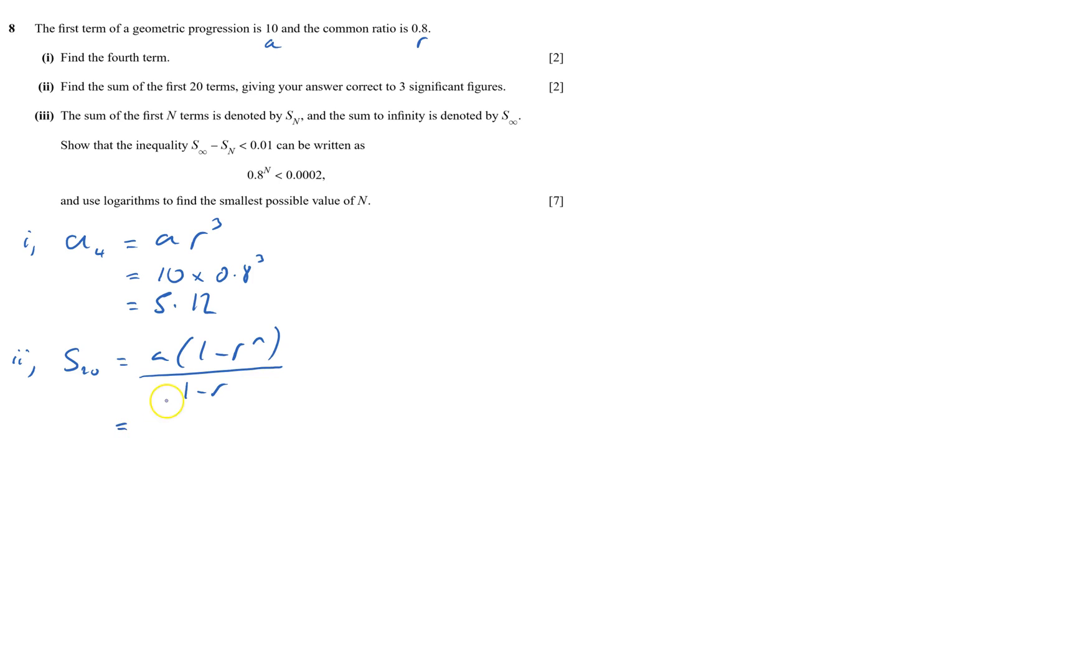Just substituting things, a is 10 times by 1 minus 0.8 to the power of 20, all over 1 minus 0.8, and that equals 49.4235, which equals 49.4 to 3 significant figures.